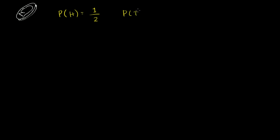Same thing if we ask: what is the probability of getting tails? There are two equally likely possibilities, and one of those gives us tails. So 1/2. And this is one thing to realize — if you take the probability of heads plus the probability of tails, you get 1/2 plus 1/2, which is 1. Generally, the sum of the probabilities of all possible events should equal 1. That makes sense because the numerator adds up to all possible events, and the denominator is always all possible events.